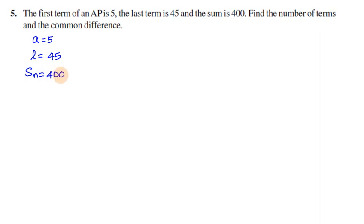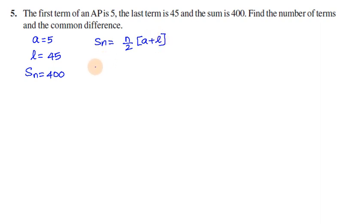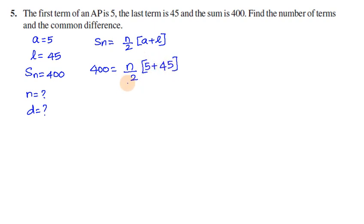So, Sn is 400. Find the number of terms and common difference. The sum formula is equal to n by 2 into a plus l. Sn is 400. n by 2 into a is 5 plus l is 45. So, 400 into 2 equals n into 5 plus 45, which is 50.